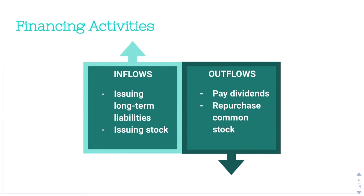Financing activities is a little bit more involved. Inflows would be things like issuing long-term liabilities or issuing stock, because in both cases we are receiving cash. Whenever the company issues stock, they're receiving cash and giving investors shares in exchange. Same thing with a long-term liability — if you are issuing debt, you are receiving cash now and promising to repay it in the future. Outflows could be things like paying dividends, which is a direct payment often in cash to investors. It could also be a repurchase of common stock — that is the company paying cash to buy the stock back.